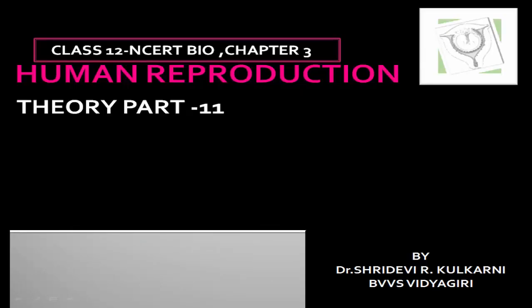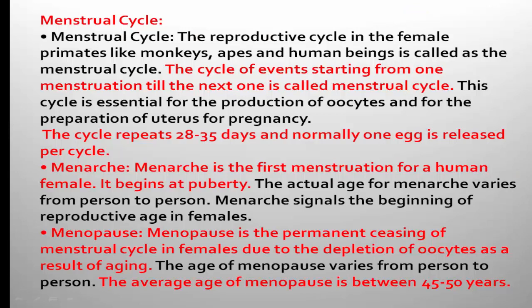In this video I am continuing the next part of human reproduction — the menstrual cycle. In the previous video I explained about the development of the female gamete egg in the ovary. The follicle cell production is completed before the birth of the female child, during embryonic development. After birth, during puberty, these follicle cells undergo maturation.